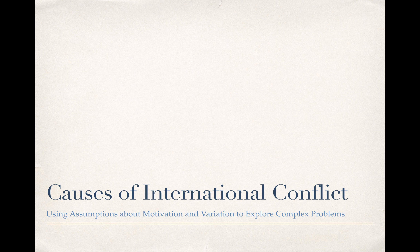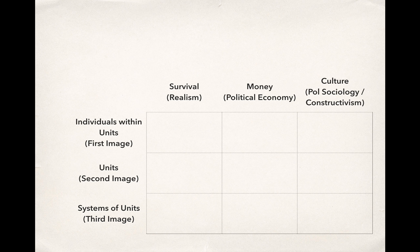We're also going to use these readings to reflect on the methods that political scientists use to determine whether an independent variable actually causes a dependent variable. And we're going to use this opportunity to talk again about the assumptions that social scientists make. The causes of war literature is a great time to review these assumptions — the theories tend to fit right into one of these boxes, giving us an opportunity to think about how you can use these assumptions to create theories that are simple and easy to understand.